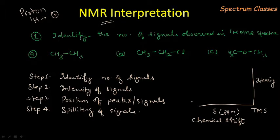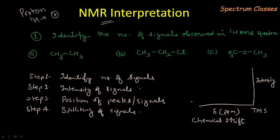There are 4 different steps to identify or to interpret the proton NMR spectrum. First, one has to identify the number of signals by seeing the molecular formula. We have already discussed about some features of the molecule where one can identify the number of chemically different protons in a given molecule. Today we are also going to discuss about the intensity of the signal — the second point is measuring the intensity of the signal. In the next video, we will discuss about the position of the peak, that is the third step.